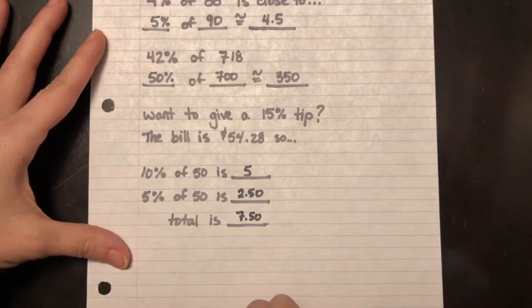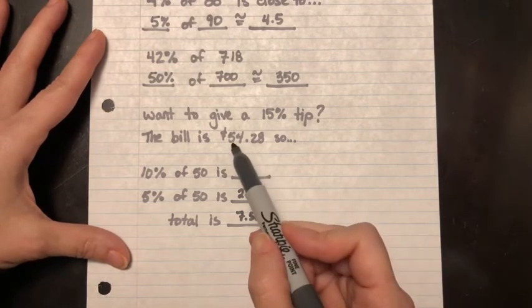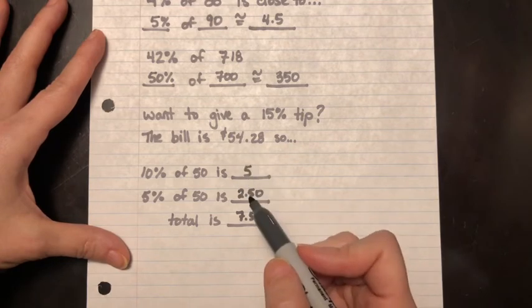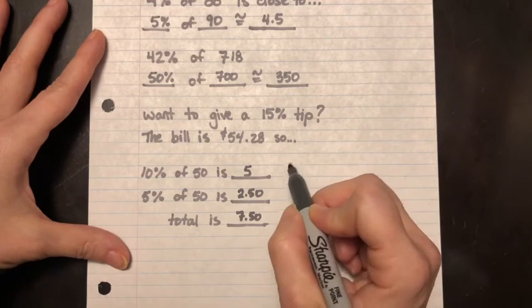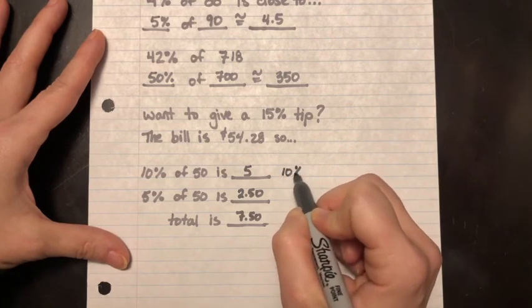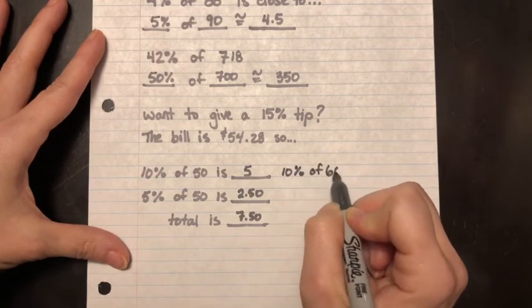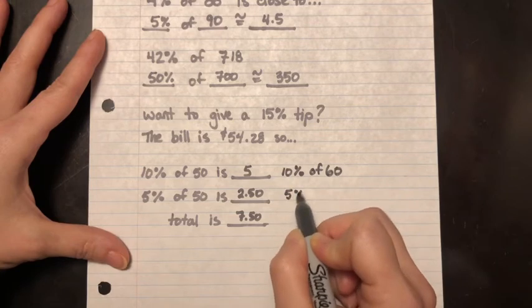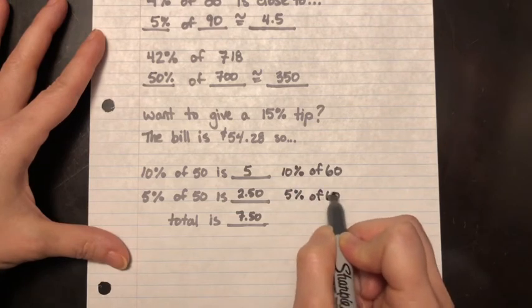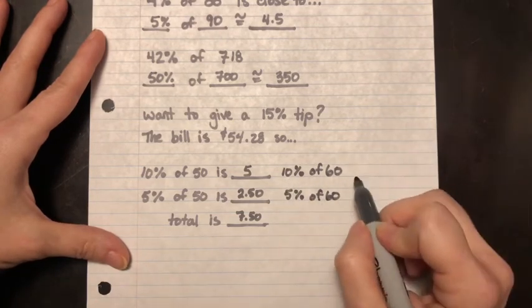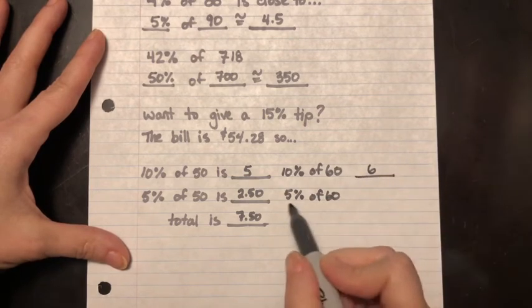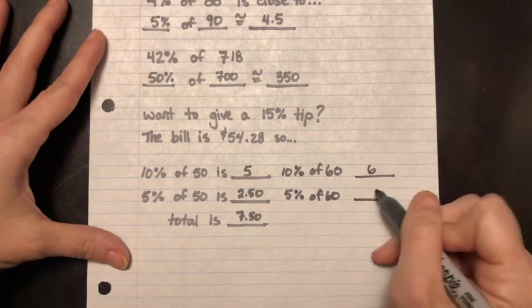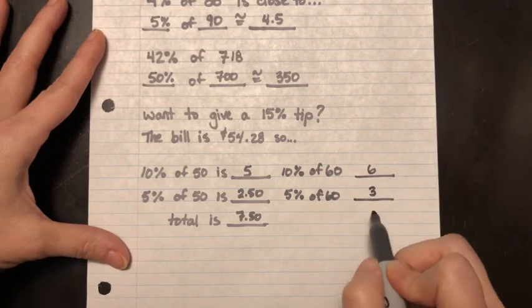Now you're going to be like, Ms. Growflow, that's cheap. It's not going to be quite 15% here because you did 50 and this is 54.26 or 28. So you know what? Let's do it again. Let's say 10% of 60 and then it's going to be 5% of 60. So 10% of 60, that's going to be about $6. 5% of that's going to be half, right? So three. So even when I do that, my grand total is $9 here.